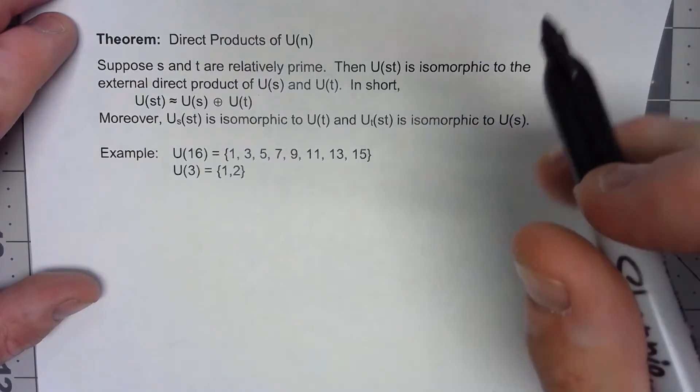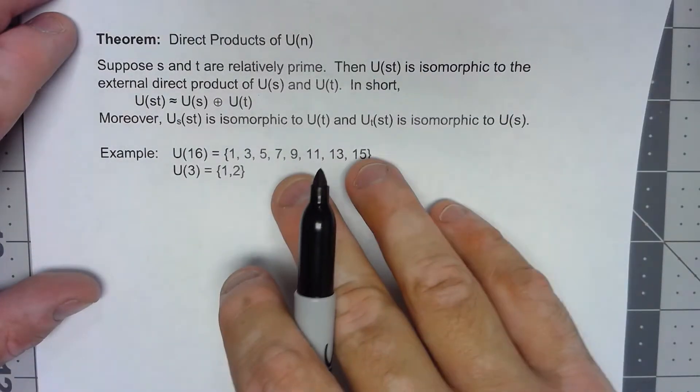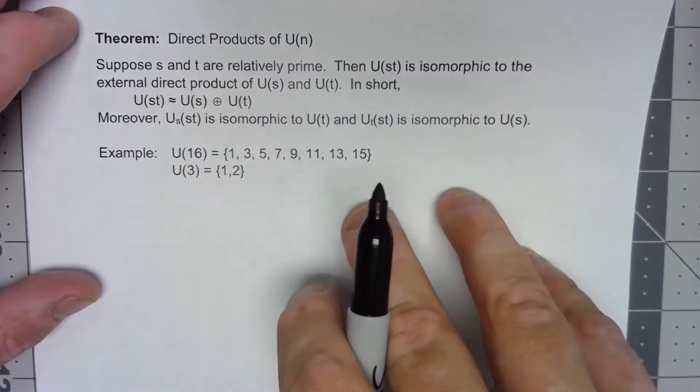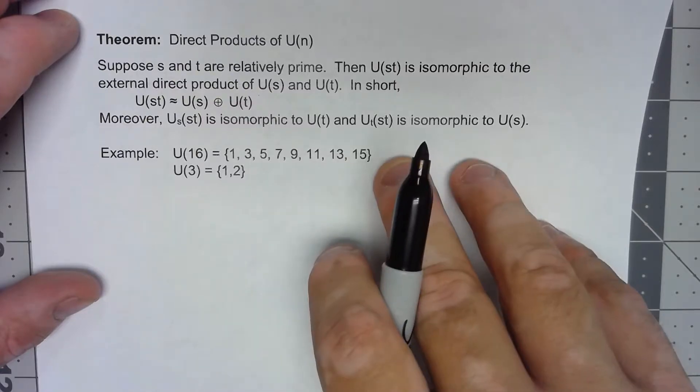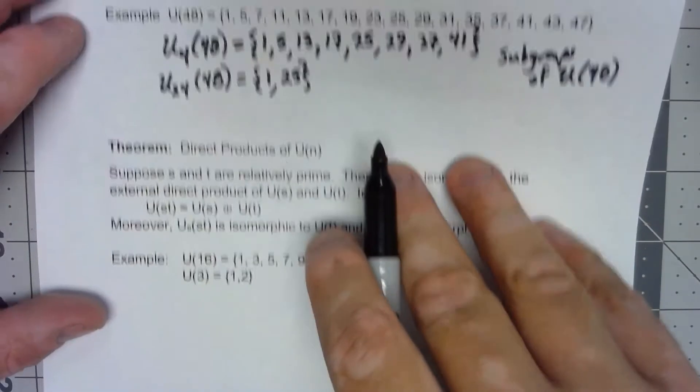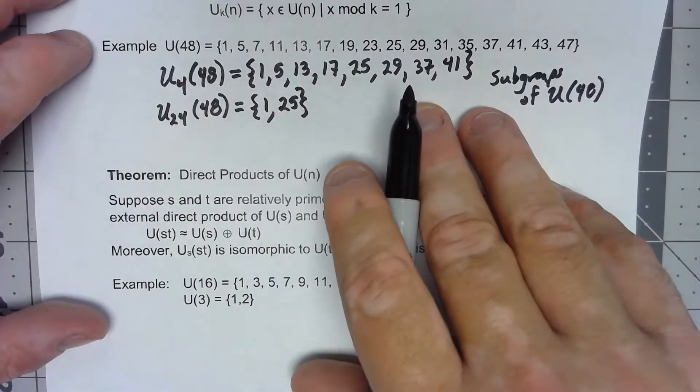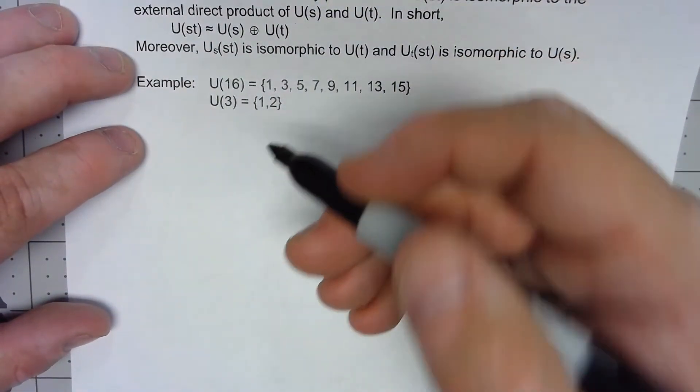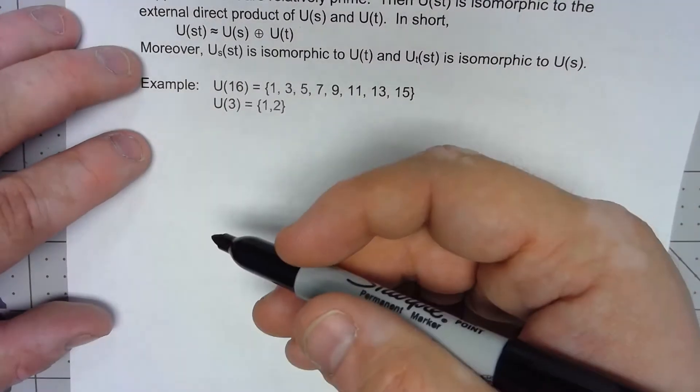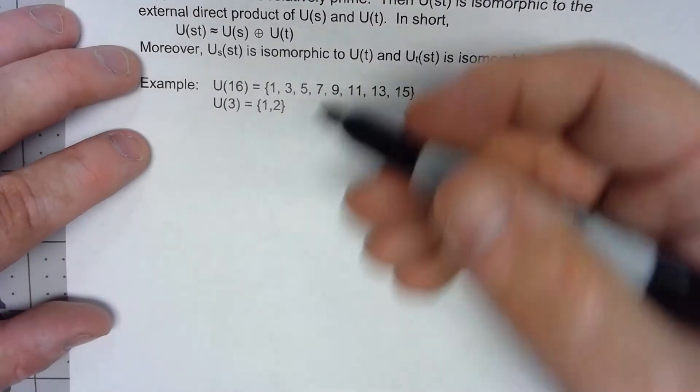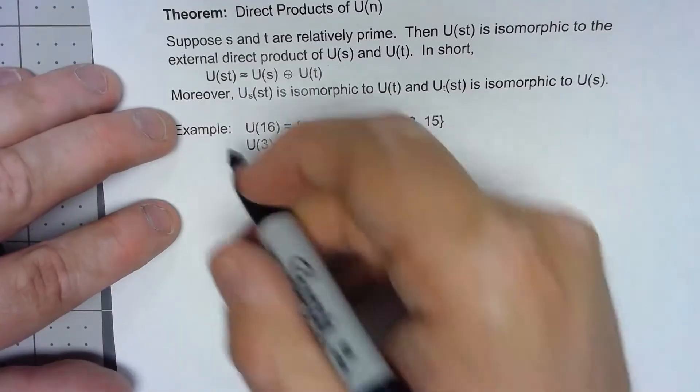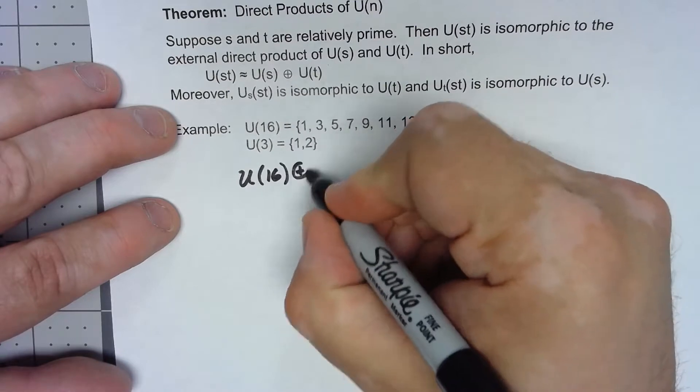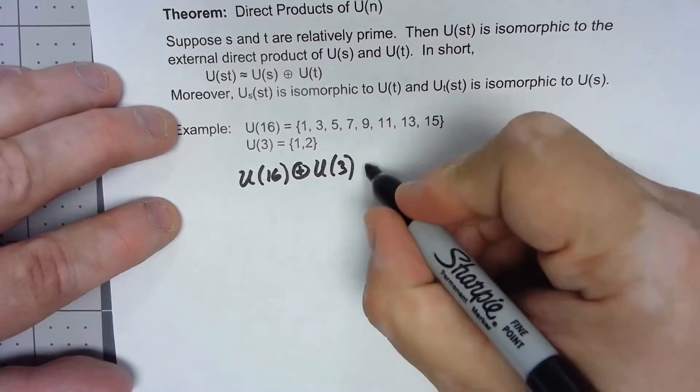Okay so there's really three things going on here. Before I try and prove this let's go ahead and just see what's going on. So I'm going to go back to this U(48) thing and what this says is I've got 16 and 3. 16 times 3 is 48 and of course 16 and 3 are relatively prime. So that means that U(16) direct product with U(3) should be isomorphic to U(48).